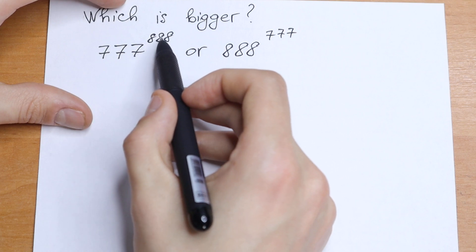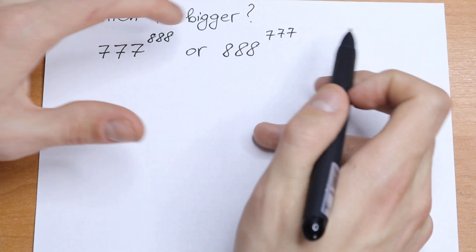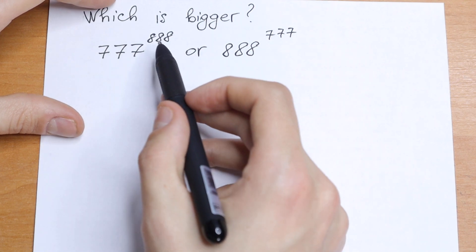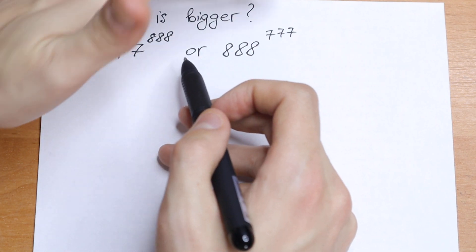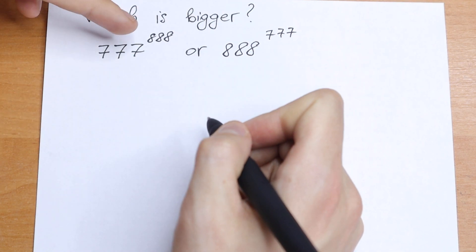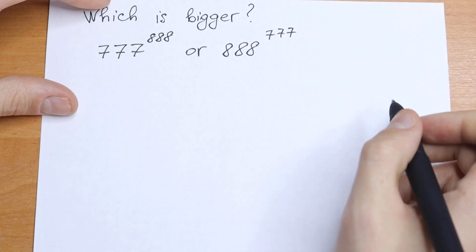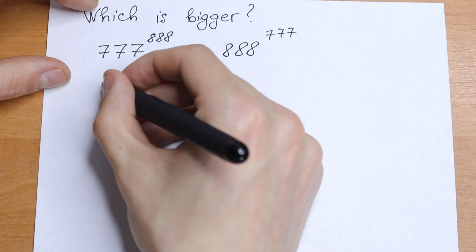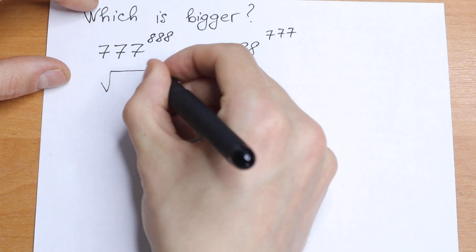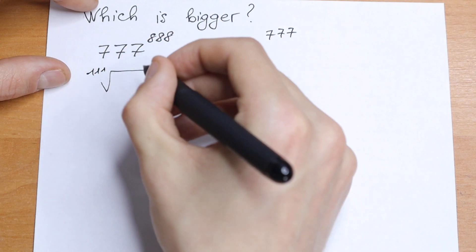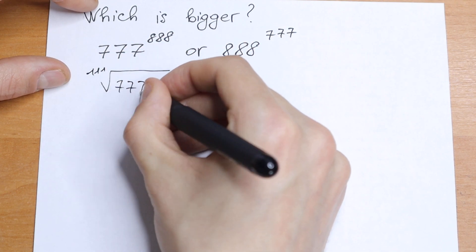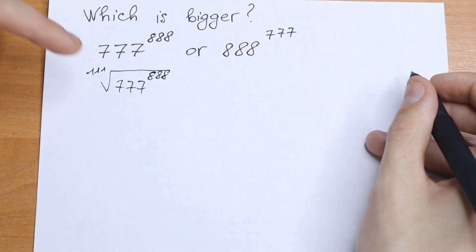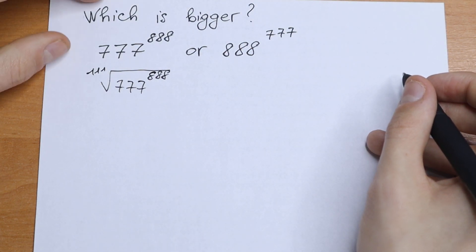Take a look. These powers on the left and on the right — we can divide by 111. So let's take the 111th root from both sides. Taking the 111th root on the left, from 777 to the power 888.